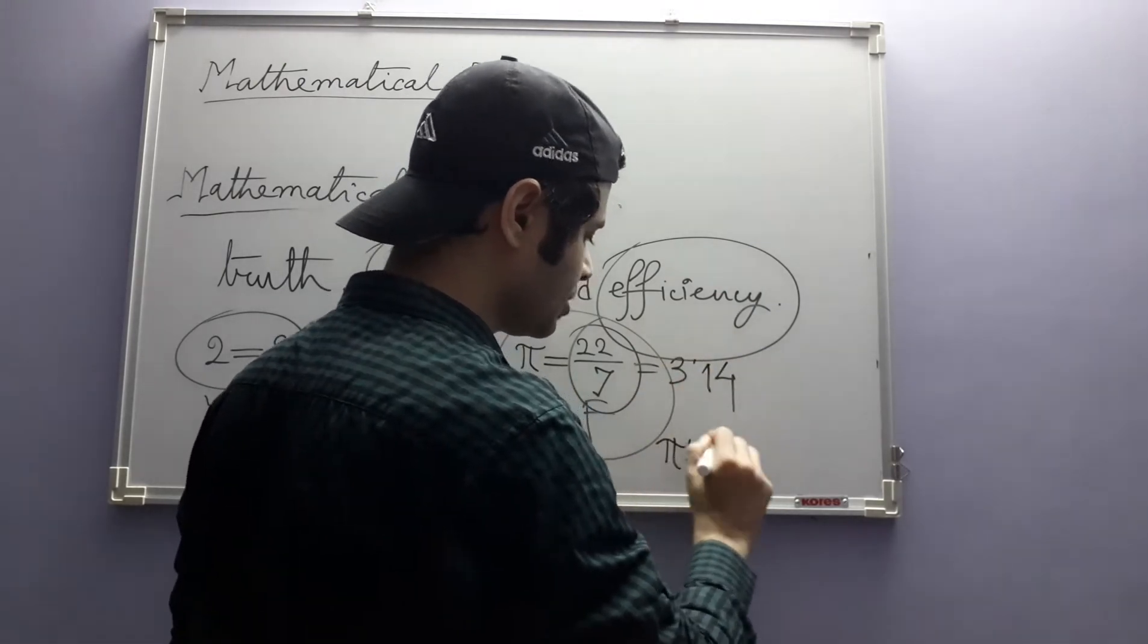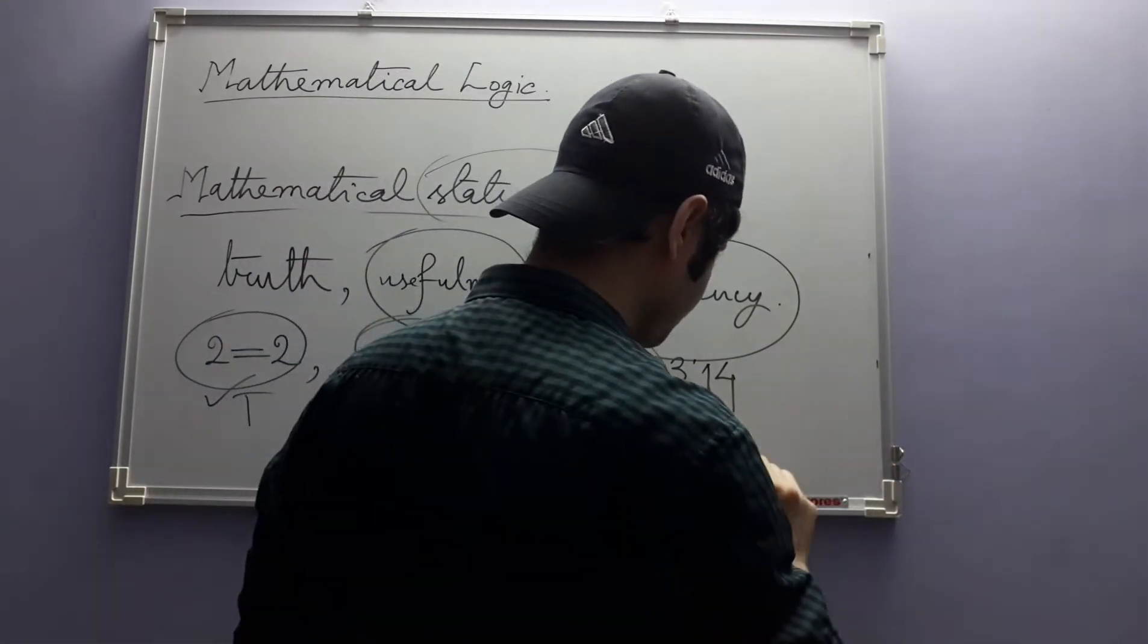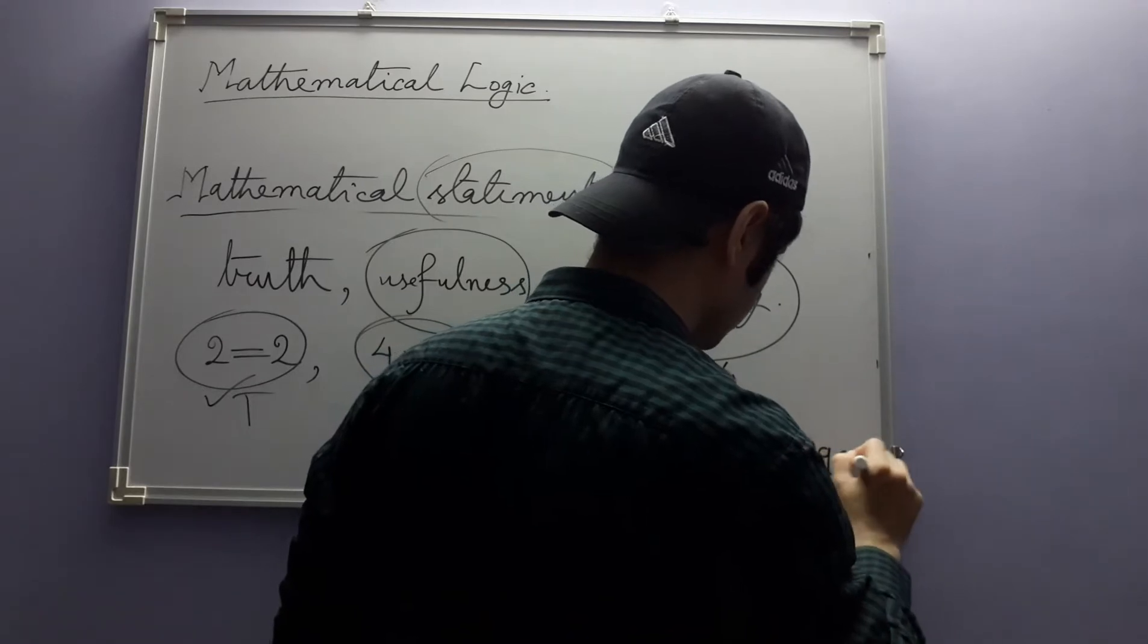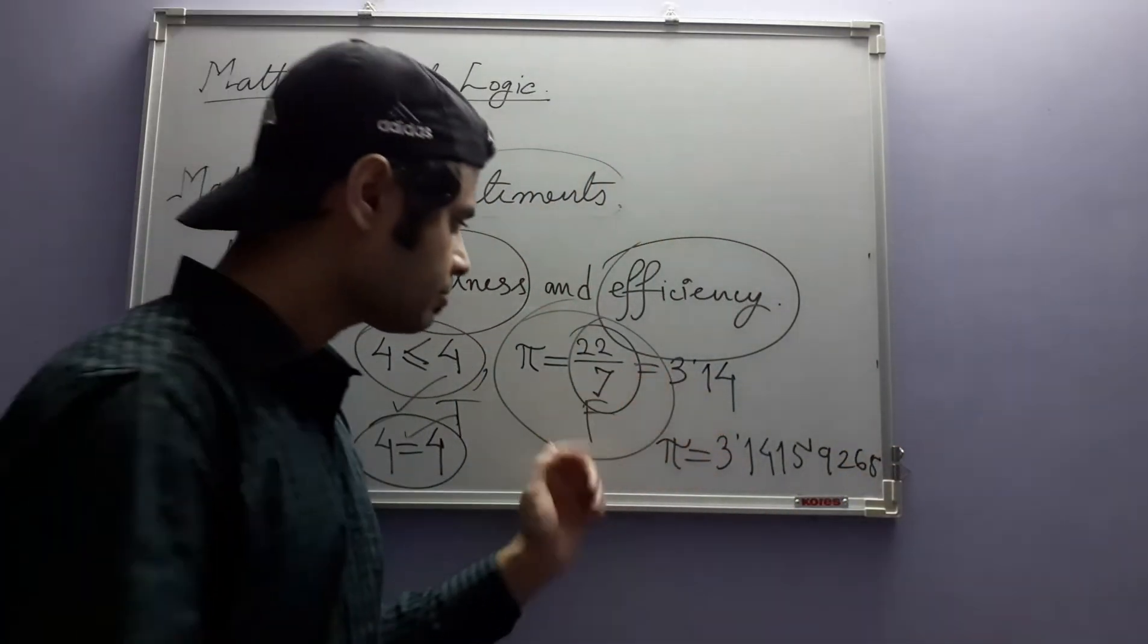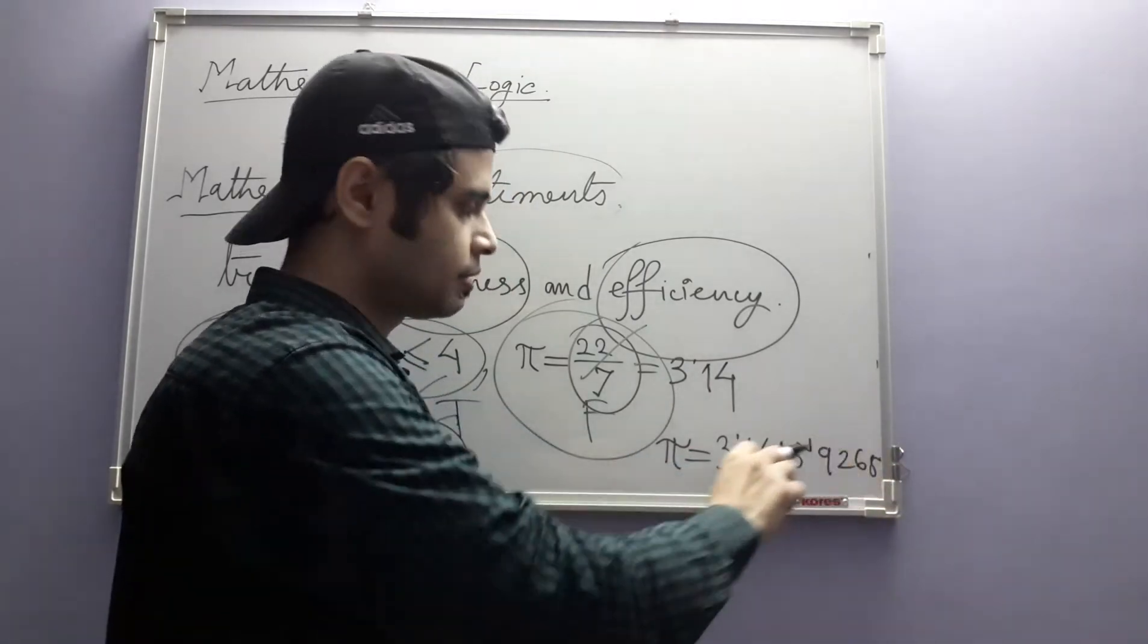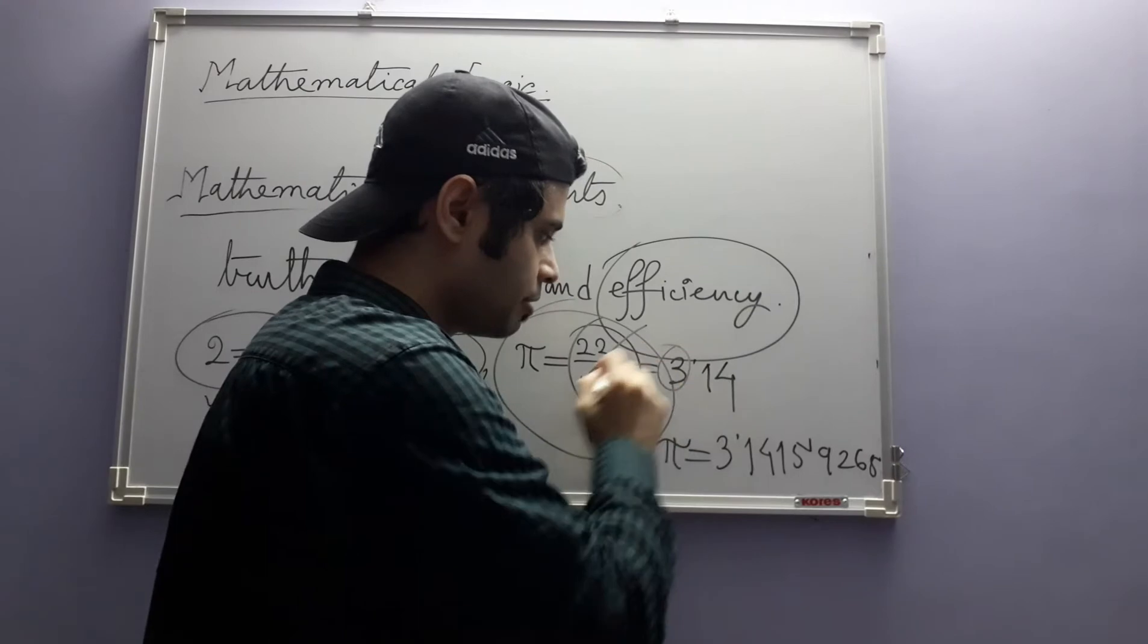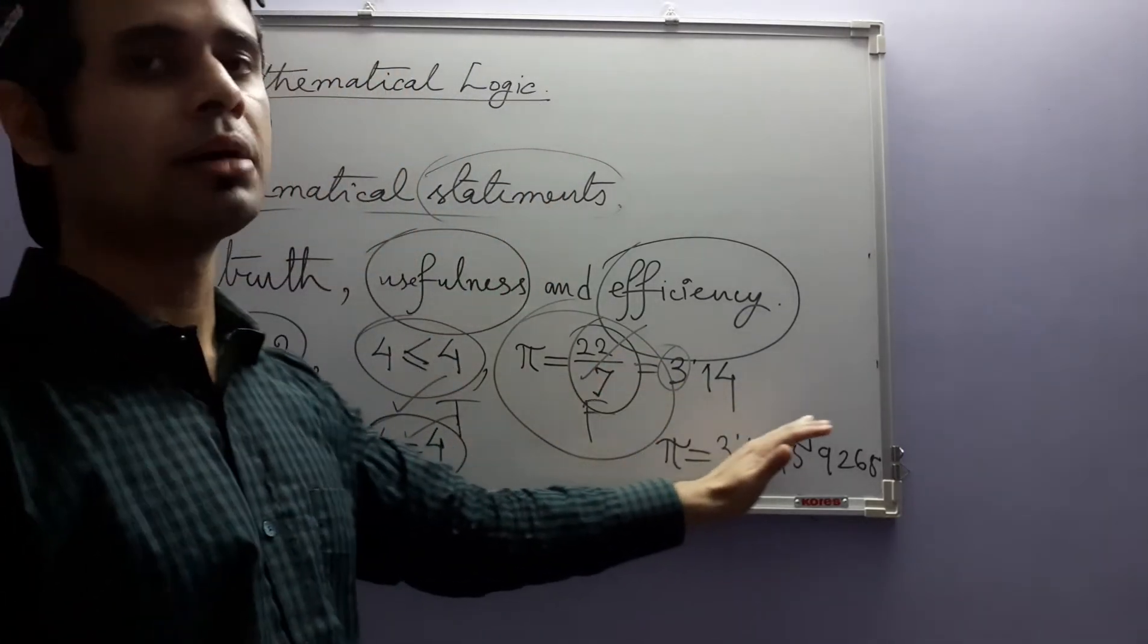Now the actual value of pi, of course, we cannot write it down since it is irrational, but some few digits, 3.141592653 something like that. So this rational number matches with the first two decimal digits of pi, along with this integer part also. So this is a first good approximation.